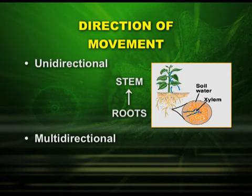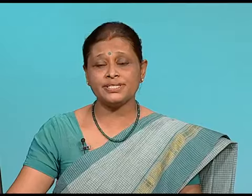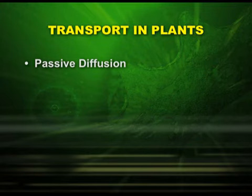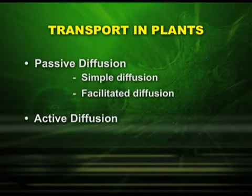The second direction is multidirectional, in which the organic and mineral nutrients are transported from leaves to other parts and storage organs. Now let us see the various ways by which water is transported in plants. There are two important processes: passive and active. The two types of passive transport are simple diffusion and facilitated diffusion, and the second main category is active transport. We are going to see individually how passive transport and active transport take place.